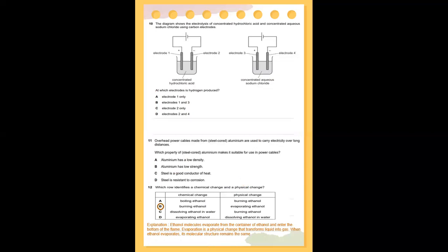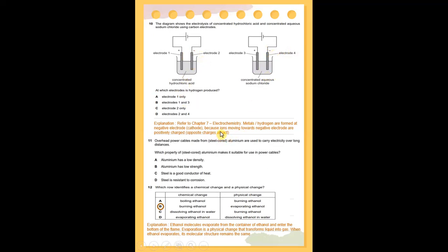The diagram shows the electrolysis of concentrated hydrochloric acid and concentrated aqueous sodium chloride using carbon electrodes. At which electrodes is hydrogen produced? Refer to chapter 7, electrochemistry. Metals and hydrogen are formed at the negative electrode — the cathode — because ions moving toward the negative electrode are positively charged. Opposite charges attract. So, the answer is 2 and 4, which is D.